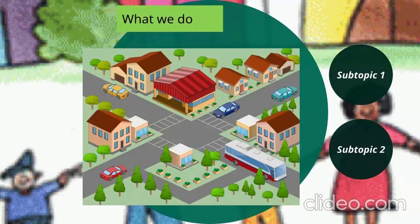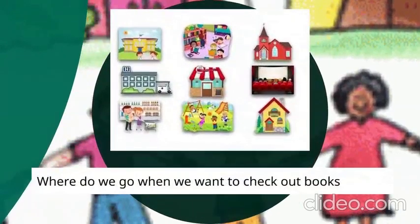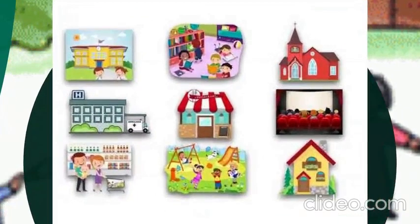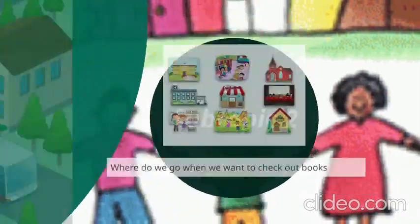Or I can go to a restaurant. Now let's check our understanding — where do we go when we want to check out books? Will I go to the garden, to the cinema, to the hospital, or maybe to the library? Yes, excellent! To check out books, I would go to the public library in my neighborhood or to my school library.